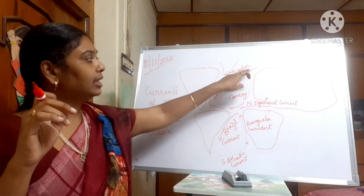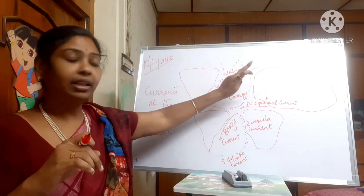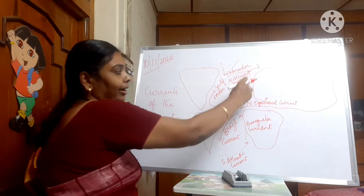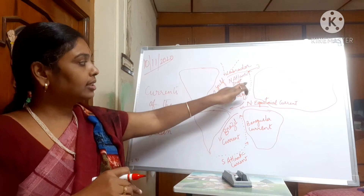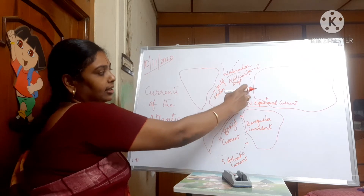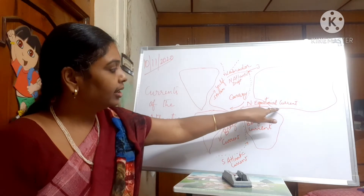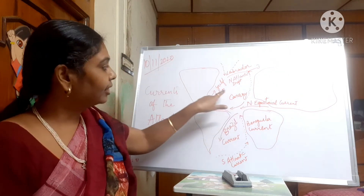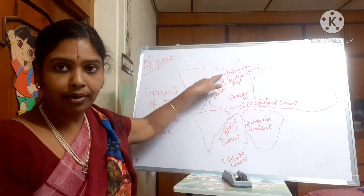As the Gulf Stream moves towards Europe, it turns into the North Atlantic Drift. This North Atlantic Drift is divided into three currents: the North Atlantic Drift itself, the Iberian current, and the Canary current. The Canary current is a cold current coming from the poles. From here we can also see the North Equatorial current.